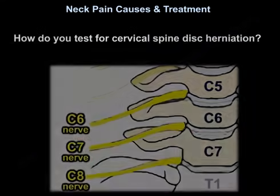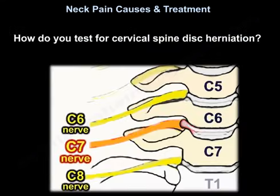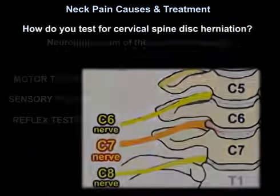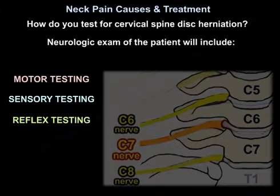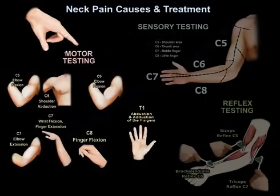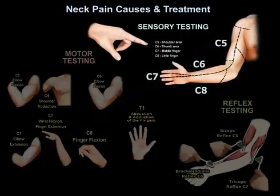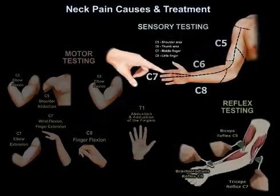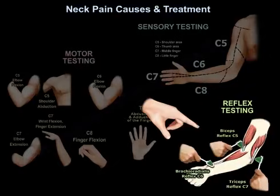How do you test for cervical spine disc herniation? You test the motor, the sensory, and the reflexes. This is how you test the motor strength of the nerve roots from C5 to T1. This is how you test the sensation, as seen in this diagram. This is how you test the reflexes, as seen in this diagram.